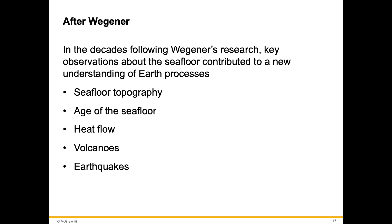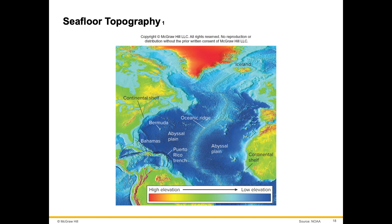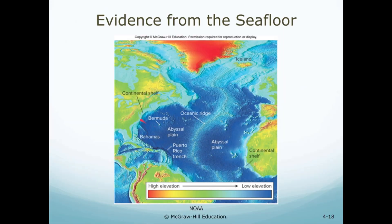In the decades following Wegener's research, key observations about the seafloor contributed to a new understanding of Earth processes: the seafloor topography, the age of the seafloor, heat flow, volcanoes, and earthquakes. Take a look here — this is the United States and the eastern coast. Here's the continental shelf, where the ocean gets significantly deeper and goes way down. Here's Bermuda, which is the top of a mountain that's under the ocean. The abysmal plain is very deep. The bottom of the ocean is not smooth — it's more like there are mountains and valleys there.